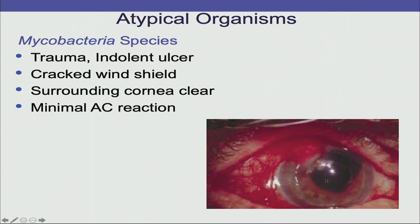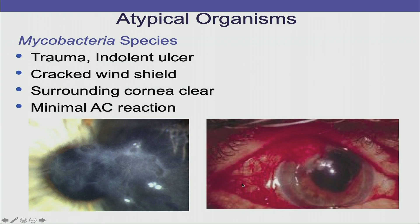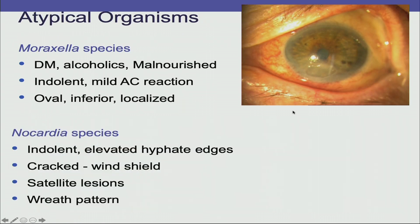Mycobacteria ulcers have a cracked windshield-like appearance with a clear surrounding cornea. They occur following trauma, are generally indolent, and have hardly any anterior chamber reaction. Moraxella ulcers tend to be inferior and oval, with hardly any AC reaction, a clear rest of the cornea, and are seen more in diabetics, alcoholics, and malnourished patients.